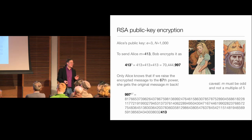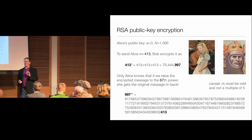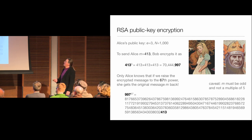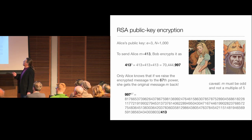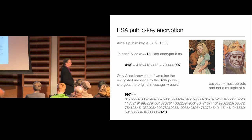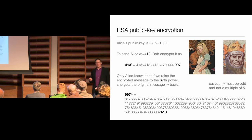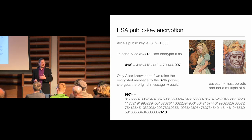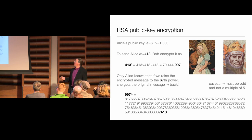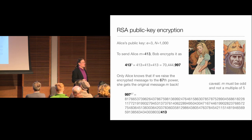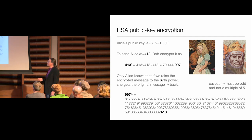Alice publishes the numbers 3 and 1000 so that anyone can encrypt things, but she keeps to herself the number 67 that allows her to decrypt it. This is why it's called public key cryptography — it's an asymmetric process. If Alice wants to talk to Bob, she uses his public key, and then he uses his private key to invert it. If you're nervous about the NSA and so on, you'll use very large numbers for E and N.